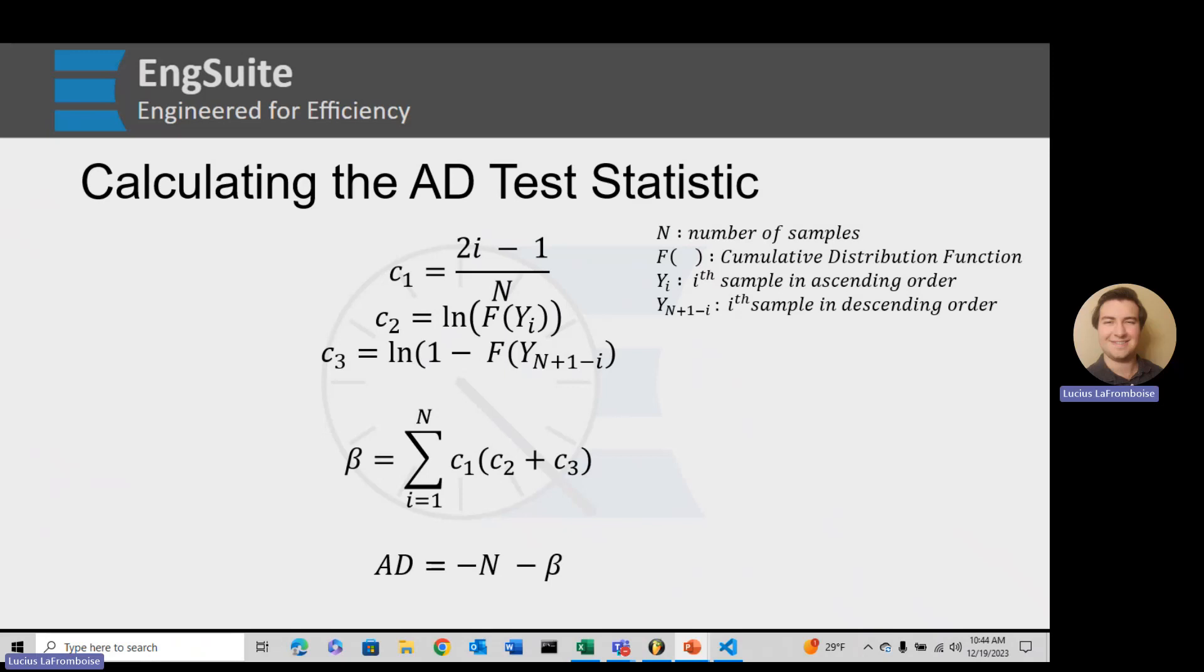So here is our equations for the Anderson-Darling test statistic all broken down. The reason we broke them down this way is once we get into the spreadsheet software, each of these, C1, C2, C3, we're going to have be a separate column just to make it that much easier when it comes to calculating for each individual data point.